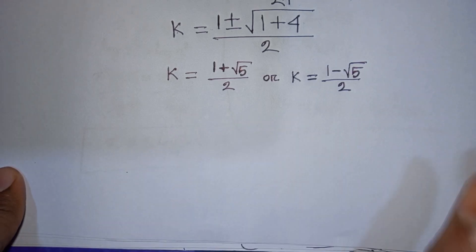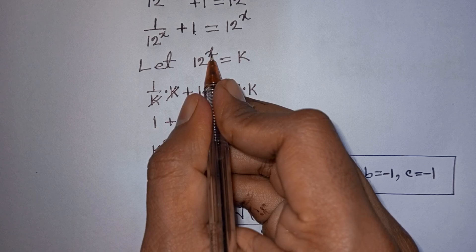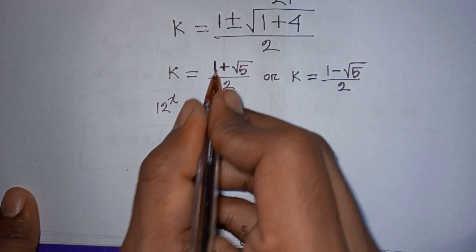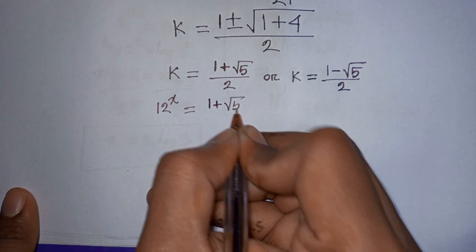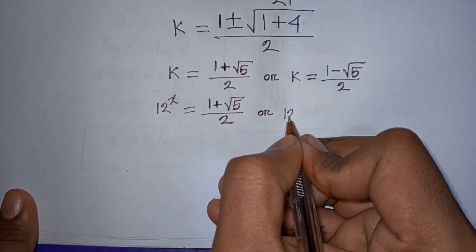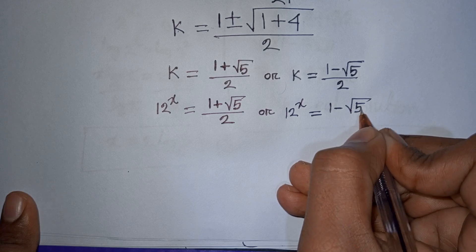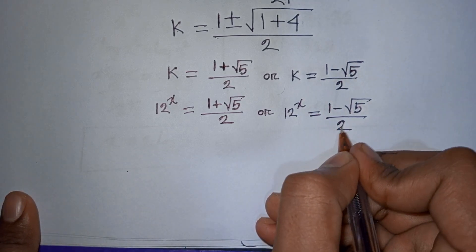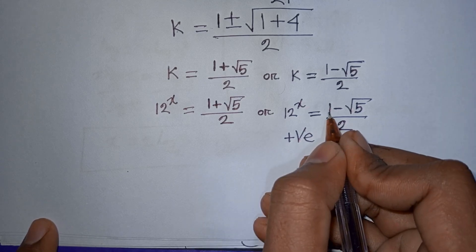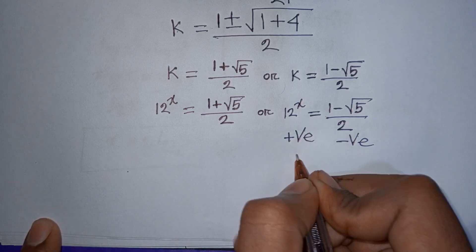Remember that 12^x was substituted by k. So k equals 12^x. Now 12 to any power is always positive, but (1 minus square root of 5) divided by 2 is negative. Since positive cannot equal negative, this case is rejected.